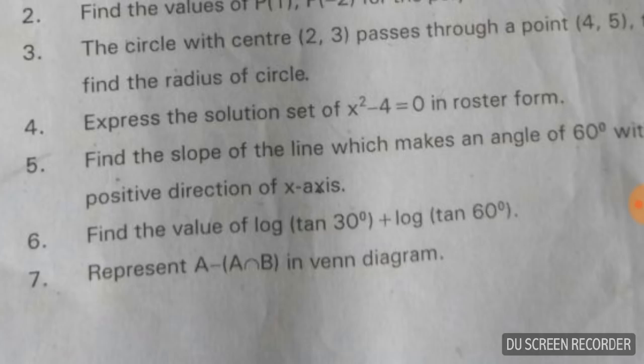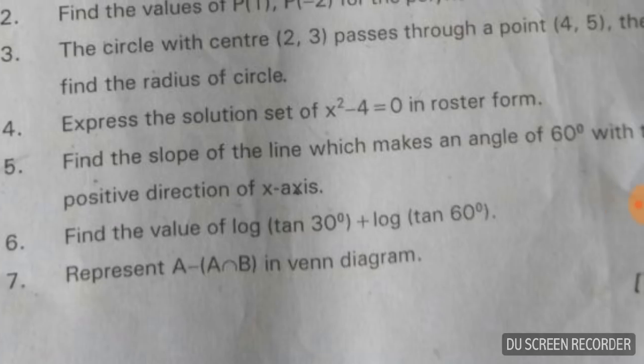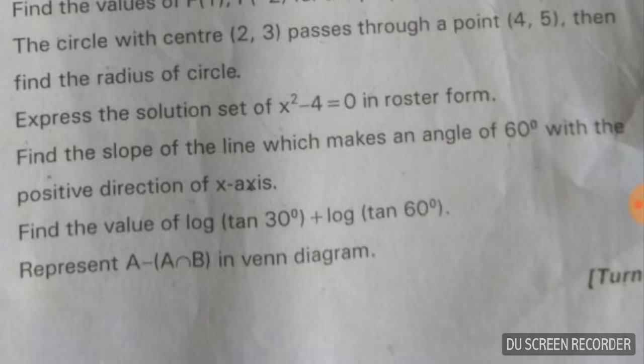Find the slope of a line which makes an angle of 60 degrees with the positive direction of the x-axis. That is nothing but m = tan θ. When the angle is given, we use m = tan θ. tan 60° = √3.